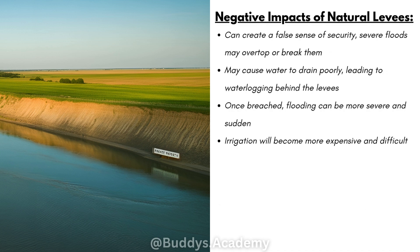However, there are also negative impacts of natural levees. They can create a false sense of security, as severe floods may overtop or break them. Natural levees may cause water to drain poorly, leading to waterlogging behind the levees. Tributaries that normally flow towards the main stream are blocked by the levees and must now flow parallel to the river. Once natural levees are breached, flooding becomes much more severe and sudden.